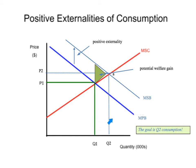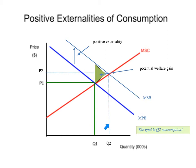What you need to think about for positive externalities of consumption is that the goal is Q2 consumption. The government wants to maximize and get this potential welfare gain realized. So what they're going to do is figure out ways of getting consumption from Q1 out to Q2.